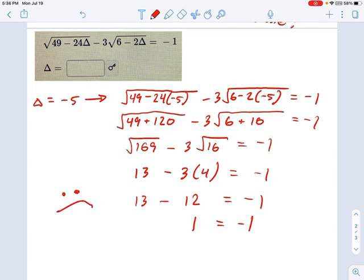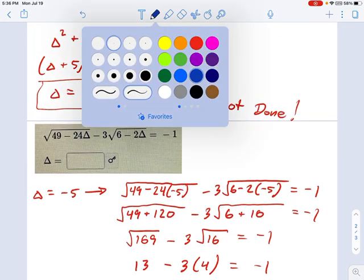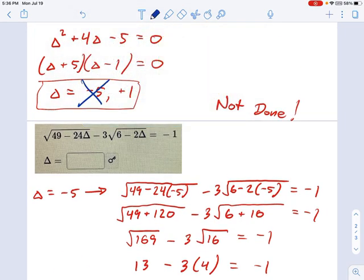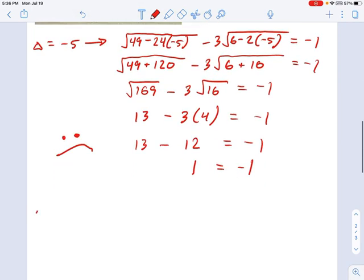So this one, where is it? We can cross out negative 5. That's not going to work. And let's move on to checking delta equals 1. At least this one's a little easier.